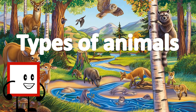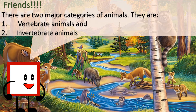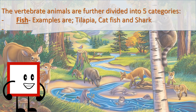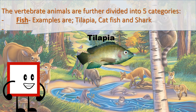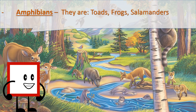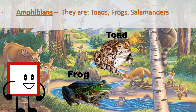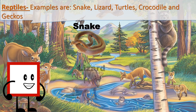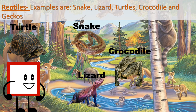Types of animals. There are two major categories of animals: vertebrate animals and invertebrate animals. Vertebrate animals are animals with a backbone and skeleton. They are further divided into 5 categories. Fish — examples are tilapia, catfish and shark. Amphibians — there are toads, frogs and salamanders. Reptiles — examples are snake, lizard, turtles, crocodiles and geckos.